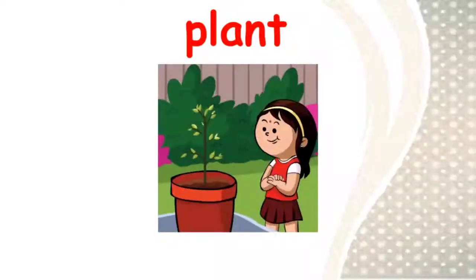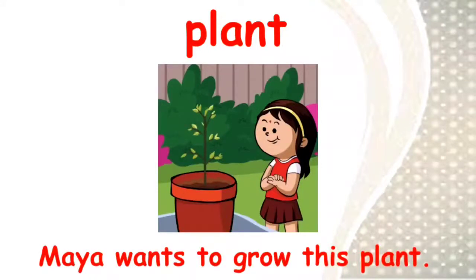The word is 'plant.' Children, please repeat: plant. Plant is a living thing which has leaves on its body. Look at the picture — you can see a small plant and a girl next to the plant. I hope you all remember her name: she is Maya, and we have read about her in the story named 'The Magic Tree.' I have used the word plant in a sentence: 'Maya wants to grow this plant.'